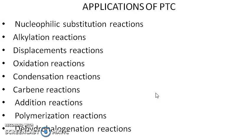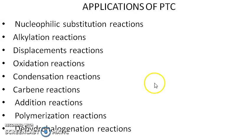PTC is mainly used in synthetic organic chemistry, wherein we can synthesize a lot of new organic compounds using simple PTC and we need not go for toxic reagents or solvents. That is the most beautiful advantage of phase transfer catalysis. Now let us see a few examples related to the actual applications.